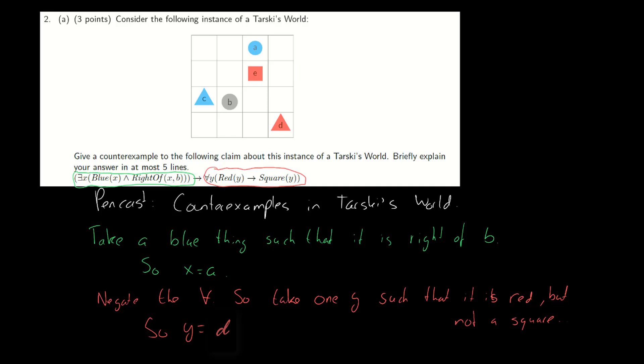So our counterexample for this claim is take X equals A to make the left part true and take Y equals D to make the right part false. That's all there is to it, see you around for the next one.